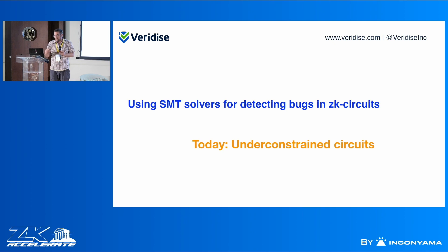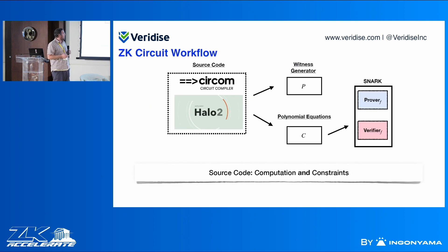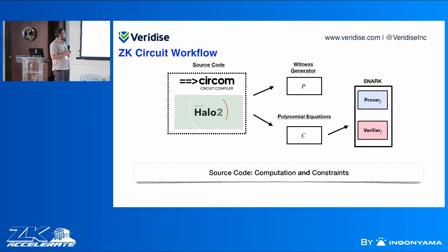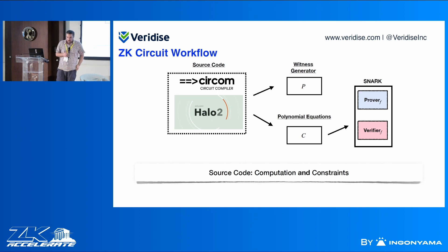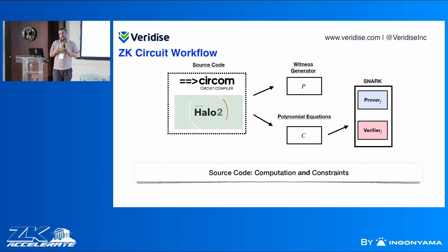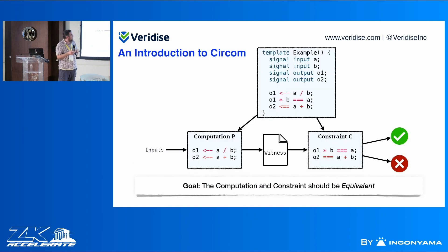I'll talk about under-constrained circuits, but of course you can do the same thing for many other kinds of bugs. In the ZK workflow, you write source code with a domain-specific language. As opposed to normal programming, you have two components: the witness generator, which is just the usual running of the program, and the generation of constraints. From the constraints you construct the prover and corresponding verifier. The upshot is your source code consists of two parts — computation and constraints — and you want these to be equivalent.